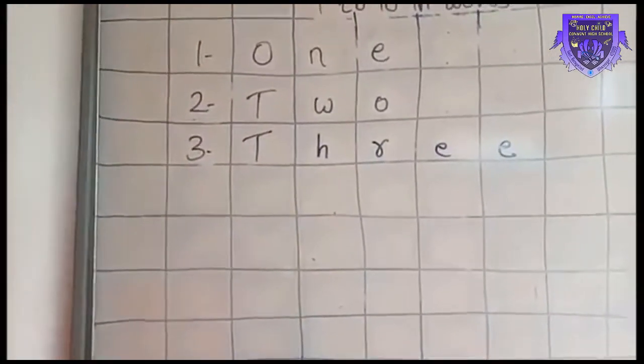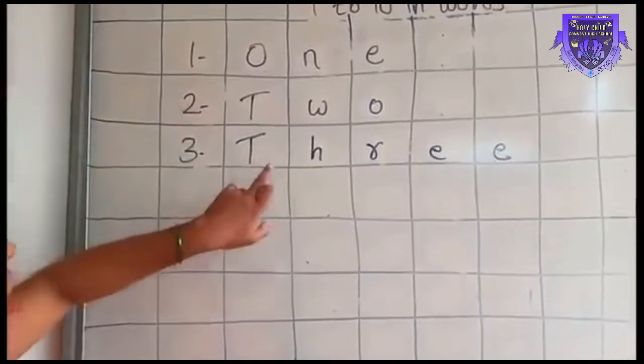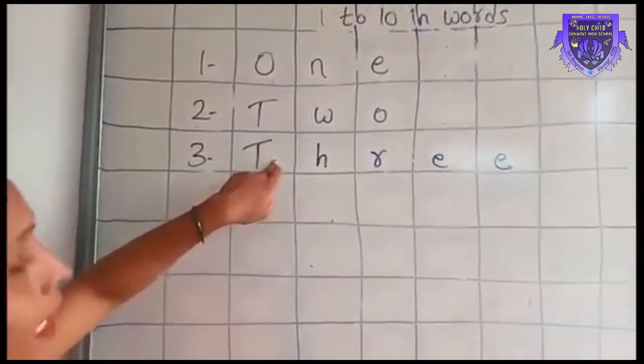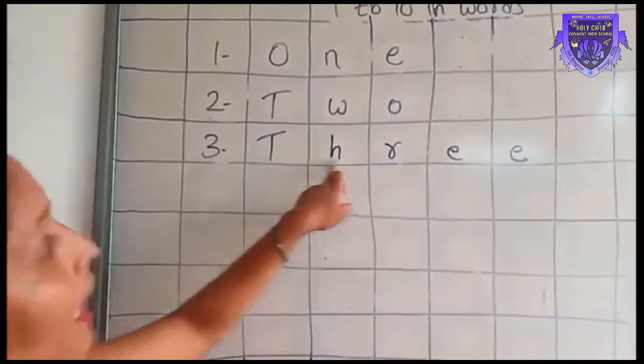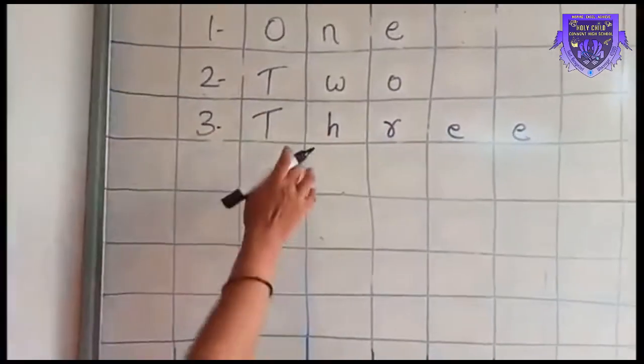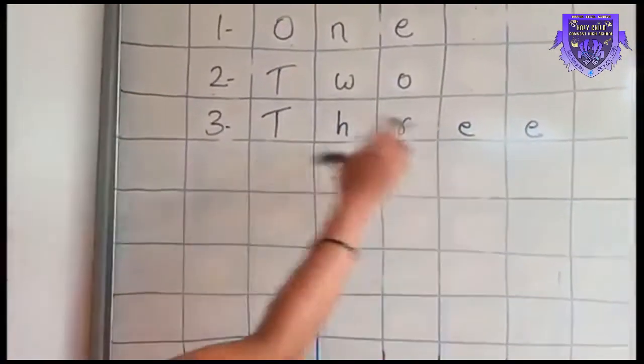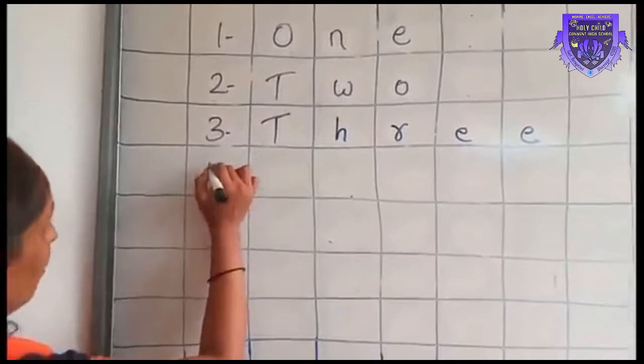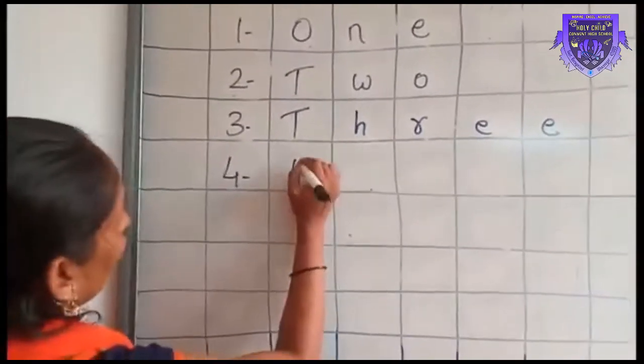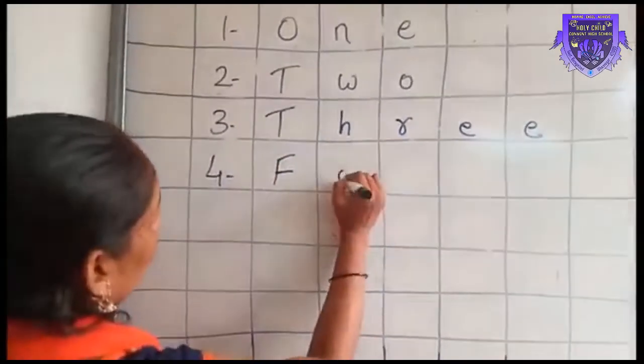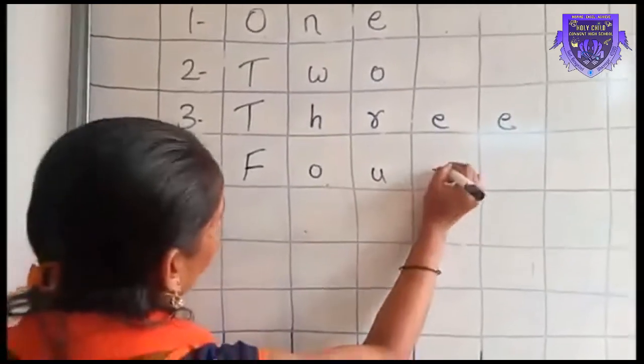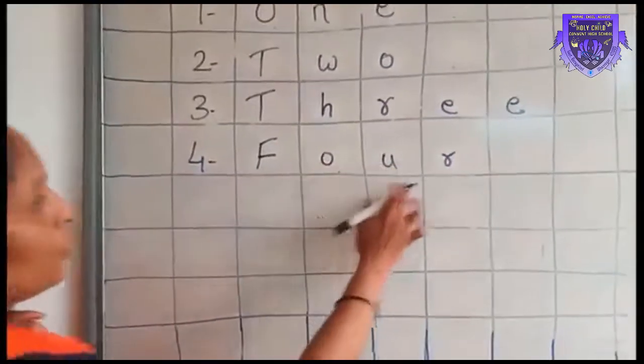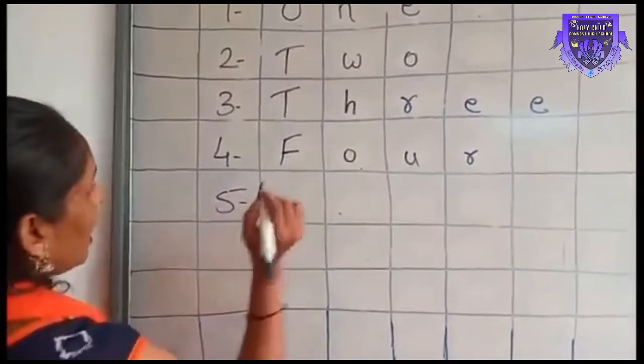So I hope you all have understood that I am writing T in capital, and then the letters I am writing are in small letters. So you have to write like that only. Number 4: F in capital, O-U-R, four.